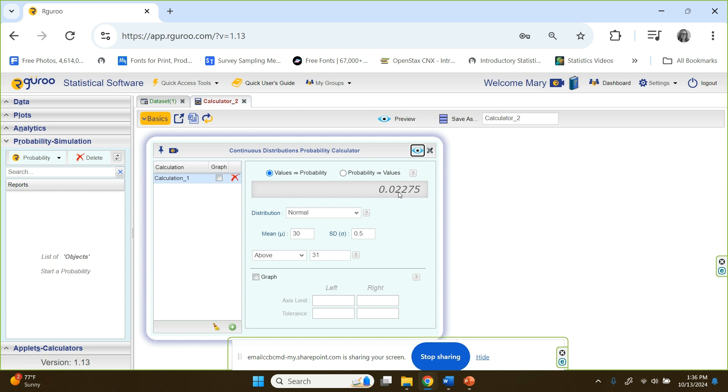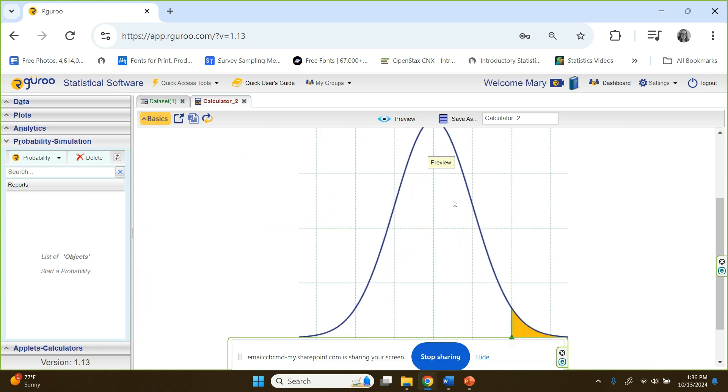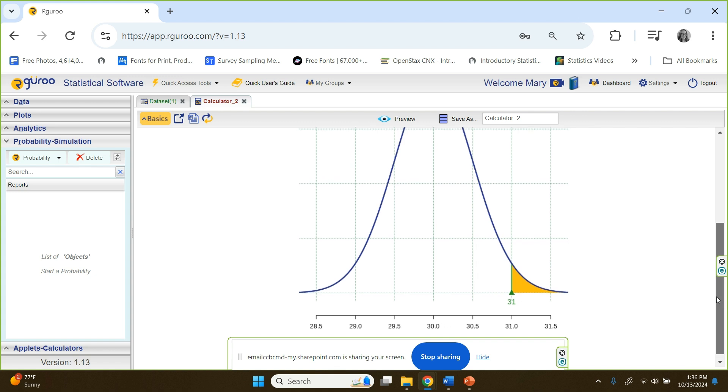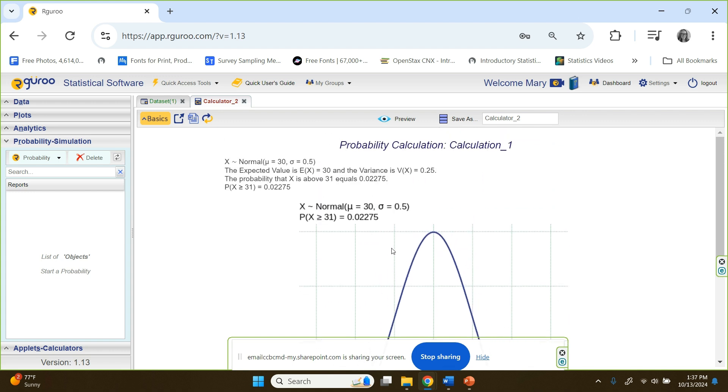It's 0.02275 right there in the gray bar. If we want to take a quick peek at it, we can look at a graph. There's our mean at 30. Our standard deviation was a half, so you can see these tick marks are kind of nice and conveniently half, so they're actually the distance of a standard deviation. And then the area above 31 in that yellow region is quite small, which corresponds to our probability being 0.02275.